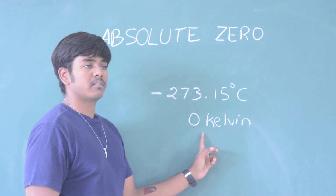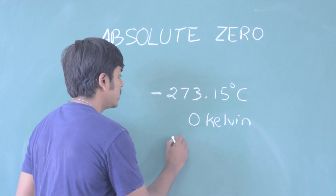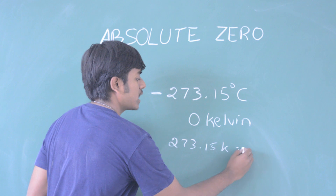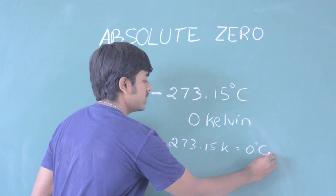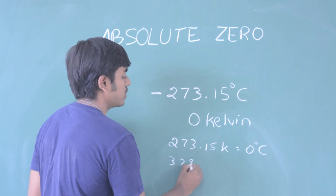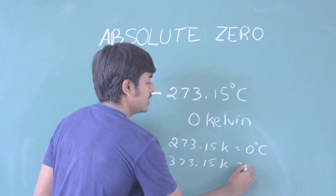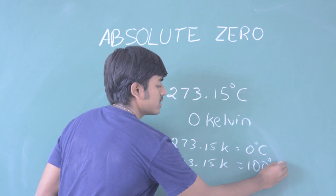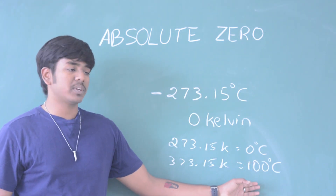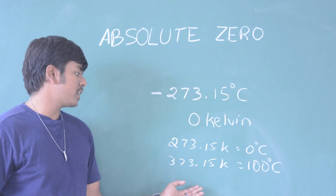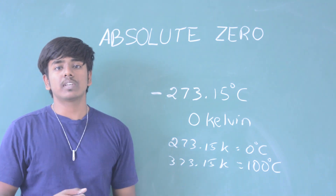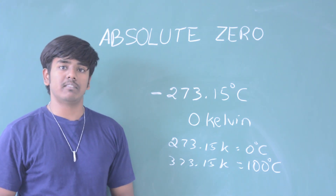If we consider zero Kelvin as our starting point, then zero degrees Celsius equals 273.15 Kelvin, and 100 degrees Celsius equals 373.15 Kelvin. If we add a temperature in Celsius, we add 273.15 to get Kelvin. This is the Kelvin scale.